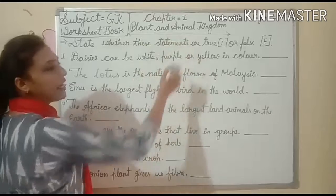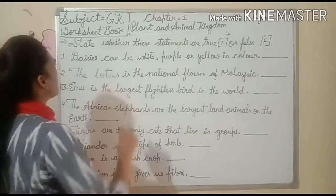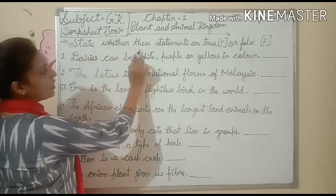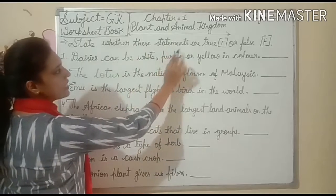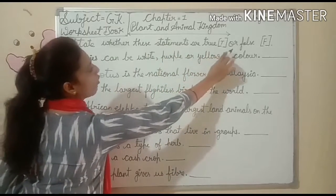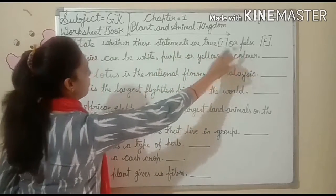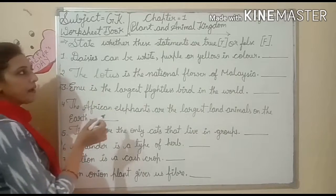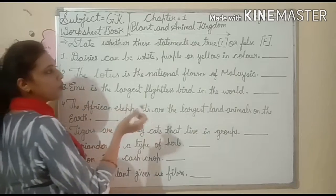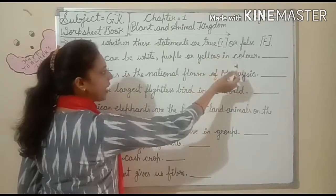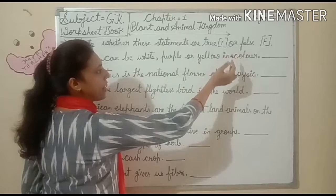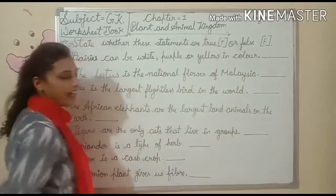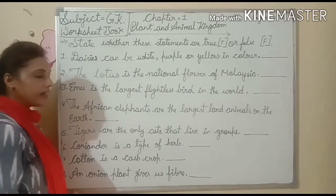Plant and Animal Kingdom. In this exercise, state whether these statements are true (T) or false (F). If the statement is true, you have to write T. If the statement is wrong or false, you have to write F. Let's start.